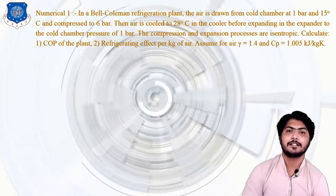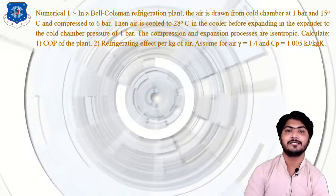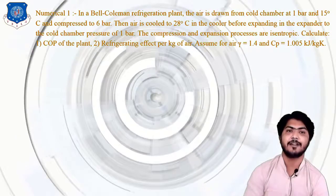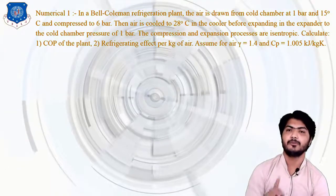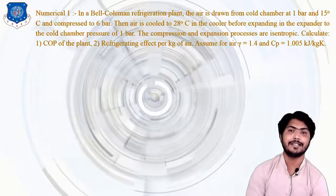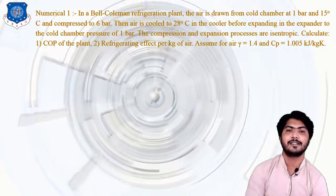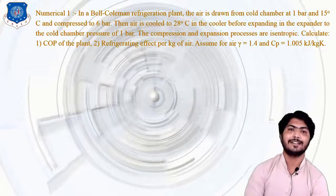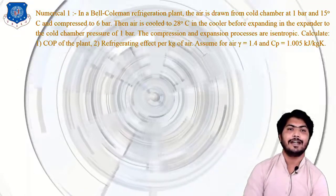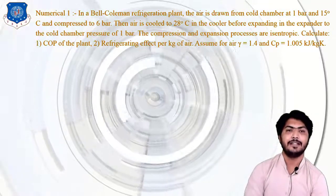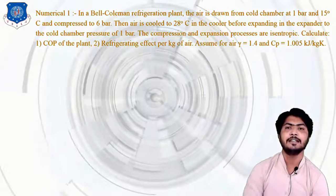The compression and expansion processes are isentropic — this is the most important line given in the numerical. Calculate: first, the COP of the plant; second, the refrigeration effect per kg of air. Assume for air: gamma (isentropic index) = 1.4, and CP (specific heat at constant pressure) = 1.005 kJ/kg·K.